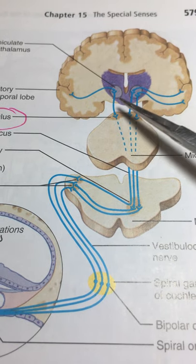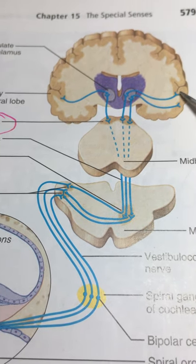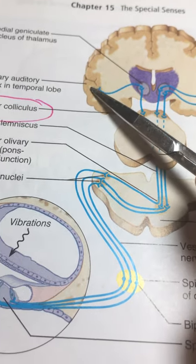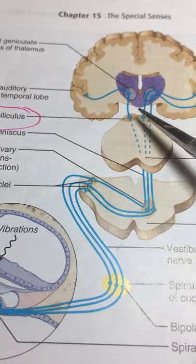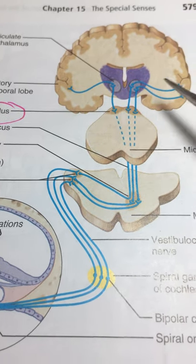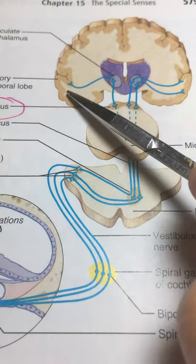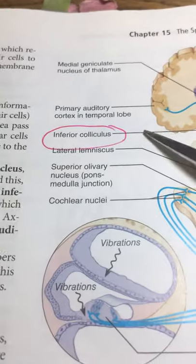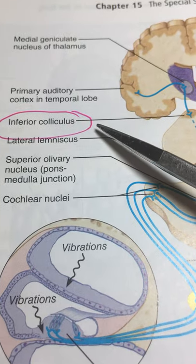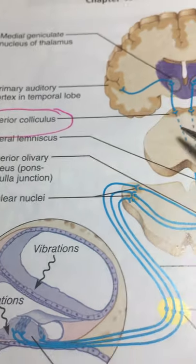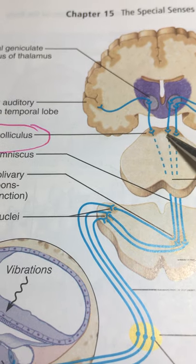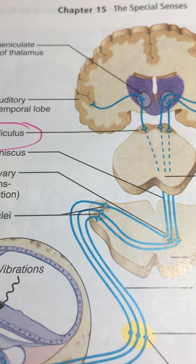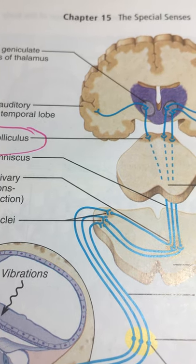The thalamus acts as the traffic cop, sorting all incoming sensory information. Sound signals are directed to the temporal lobe. Part of the signal crosses over — contralateral — and part stays on the same side — ipsilateral. The pathway also passes through the midbrain structure called the inferior colliculus, which we'll pick up again in the next part.